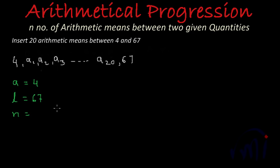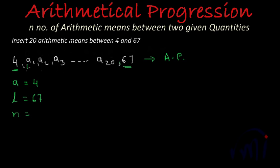How many total terms do we have? We have to insert 20 arithmetic means between 4 and 67. If we insert these arithmetic means such that including 4 as the first term and 67 as the last term they form an arithmetic progression (AP), then how many total terms will there be? We are inserting 20 terms in between, plus one term in the beginning and one term in the end, so total number of terms will be 20 plus 2, that is 22.